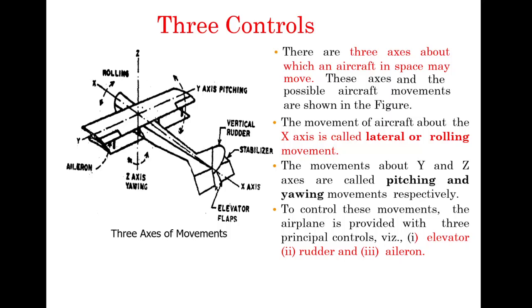Lateral movement is the movement of the aircraft about the X axis, whereas pitching and yawing movements are the movements about the Y and Z axes. To control these movements of the aircraft, three principal controls are provided: the elevators, the rudders, and the ailerons.